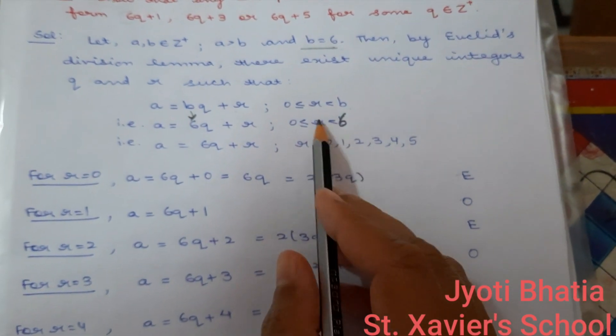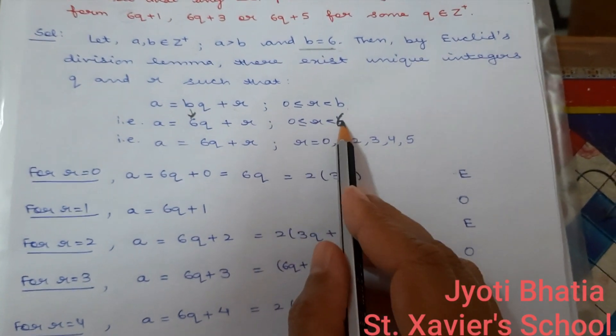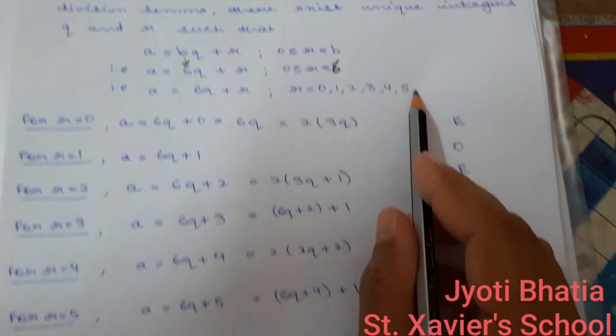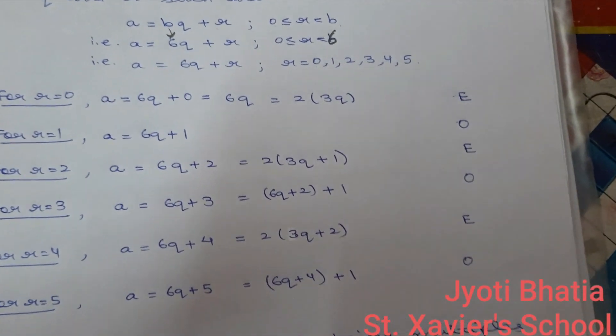R equal to 0, R greater than 0 and less than 6 means R will be 1, 2, 3, 4, 5. Right? Now, remember two things in mind.